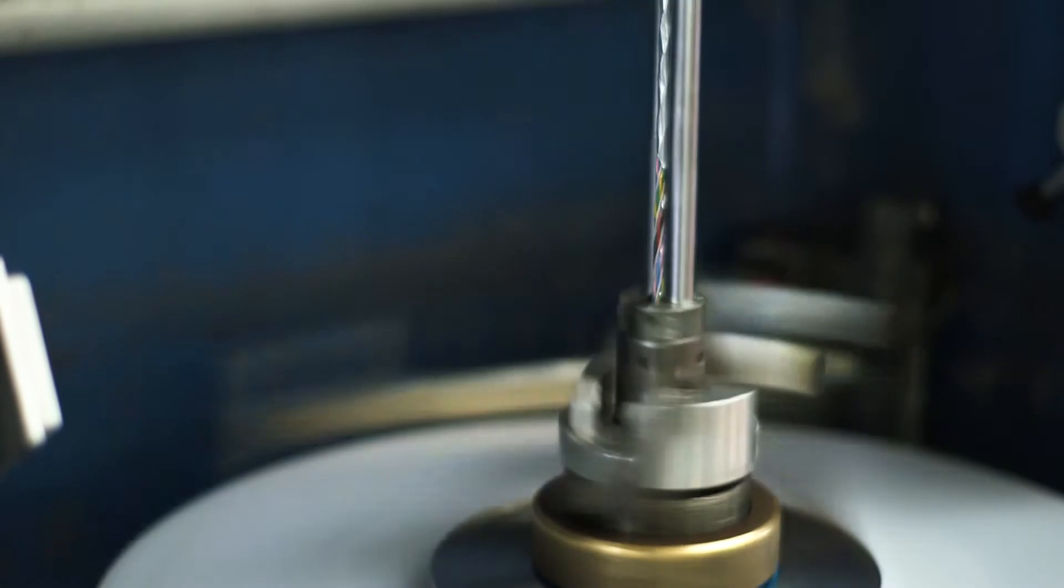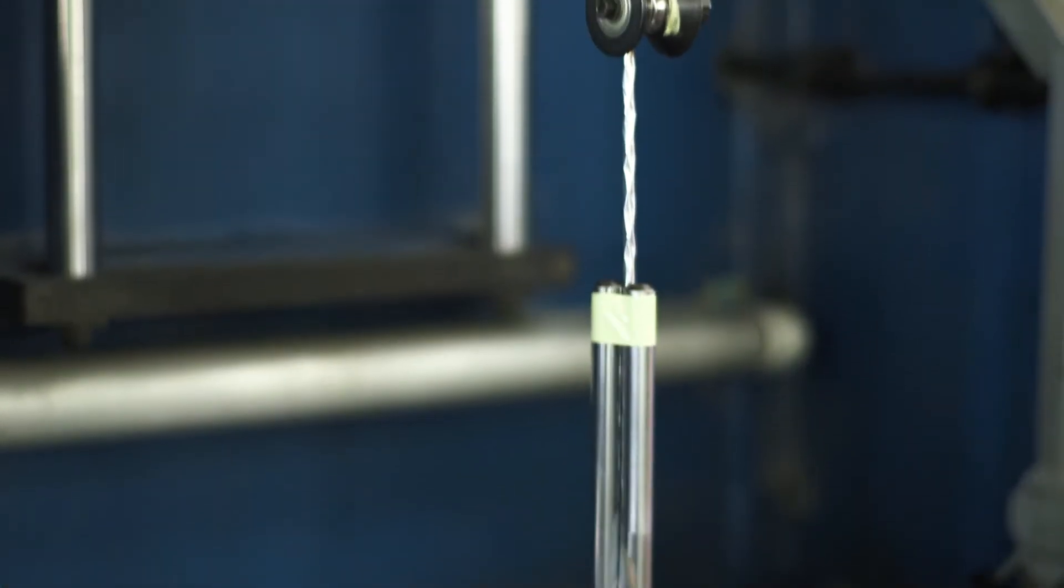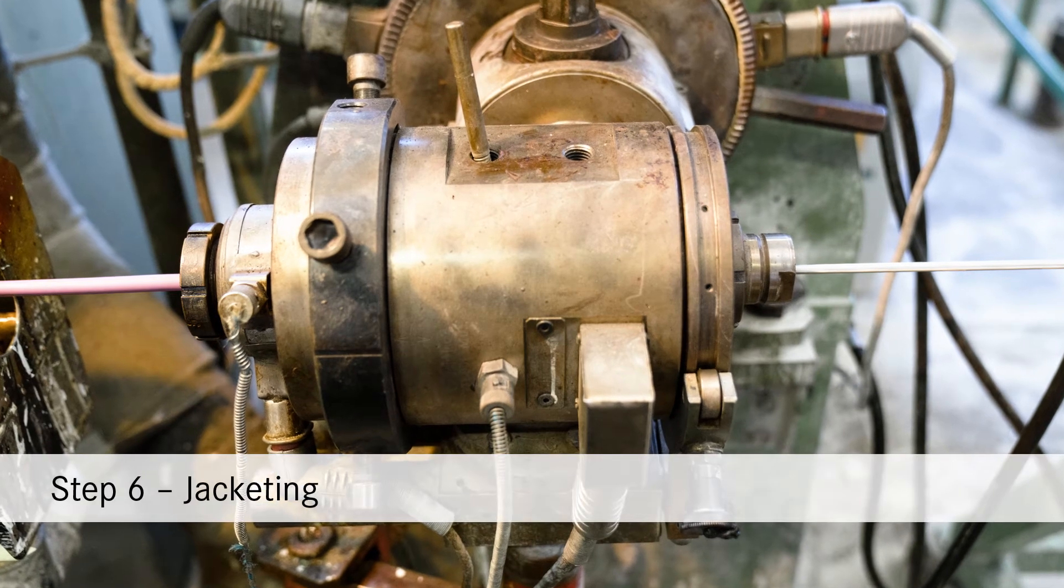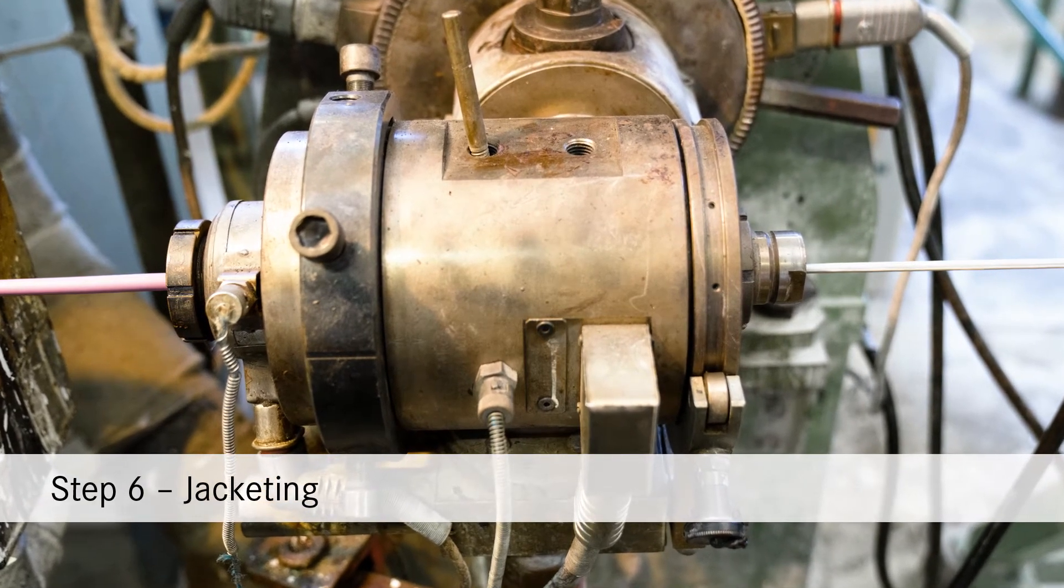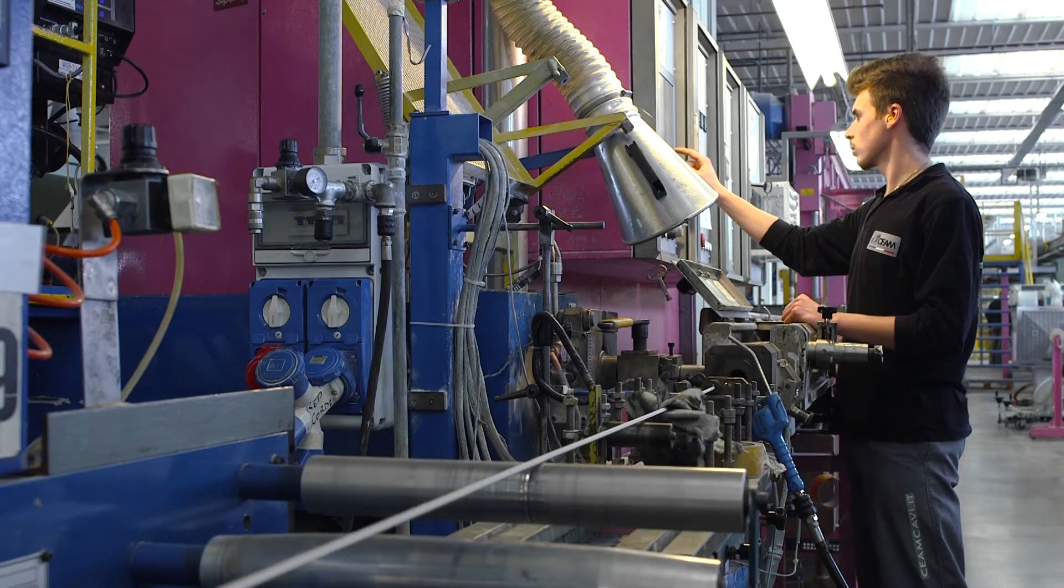For especially demanding applications, an aluminum foil layer is added beneath the weaving. The final step is jacketing, using an outer jacket extruder for protection against various mechanical and chemical stresses.